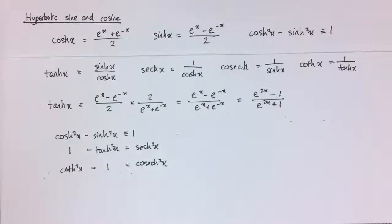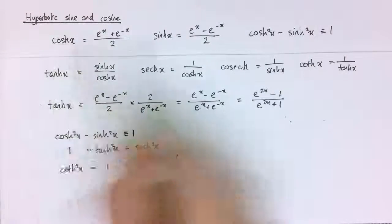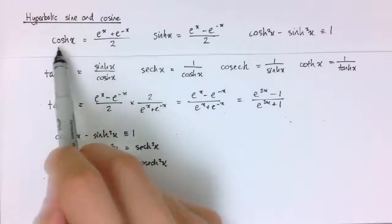We also did some differentiation and integration in the last, sorry, just differentiation in the last one. So we had the derivative of sinh is cosh, and the derivative of cosh is sinh.